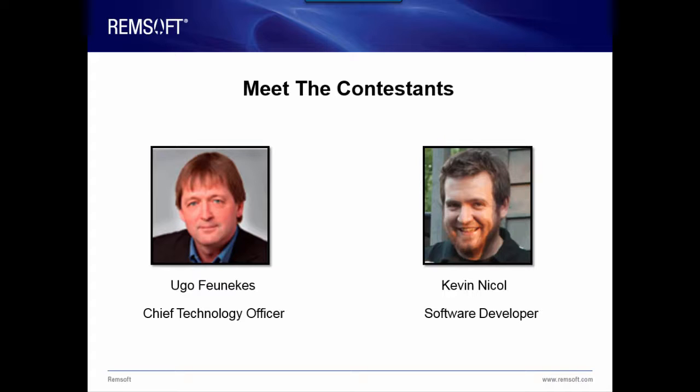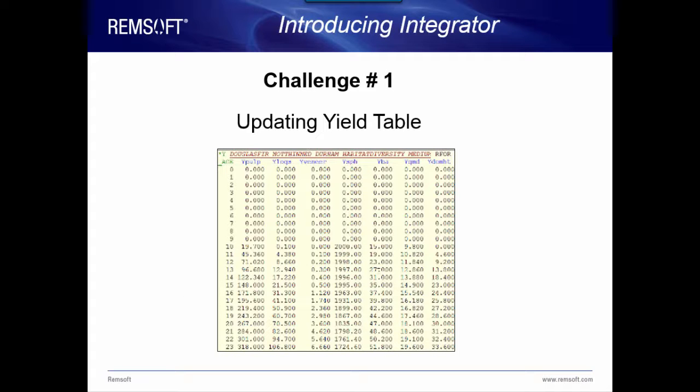Okay, time for the first challenge. After receiving the models, Hugo and Kevin were informed that there was an error in one of the yield tables, so they'll have to rebuild the yield section.